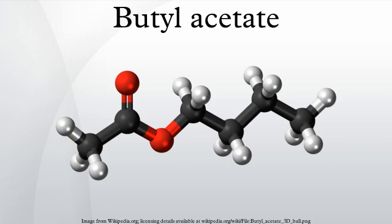It is used as a synthetic fruit flavoring in foods such as candy, ice cream, cheeses, and baked goods. The other three isomers of butyl acetate are isobutyl acetate, tert-butyl acetate, and sec-butyl acetate.